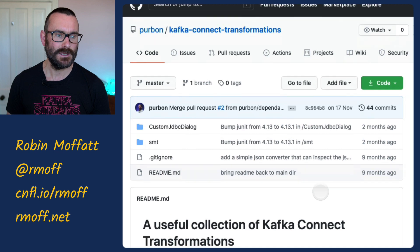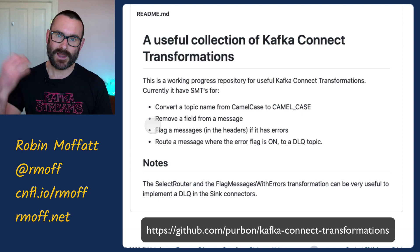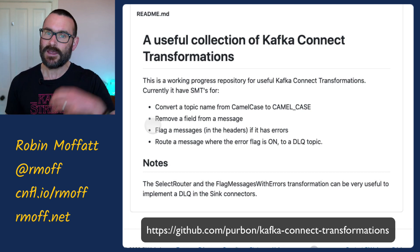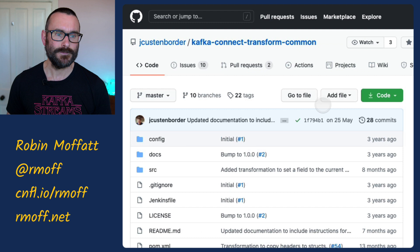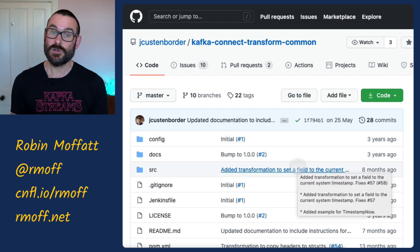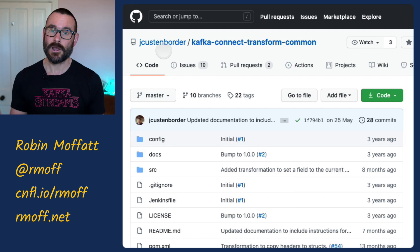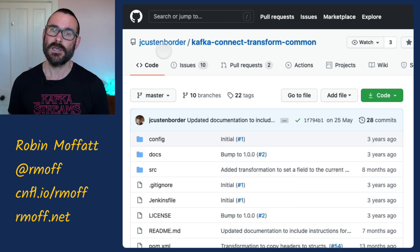Clicking around GitHub you can see different projects that implement SMTs. One looks rather interesting — I haven't had a chance to try it but it looks like you can route messages based on their contents, set a flag in the header, and Kafka headers are actually really useful and somewhat underutilized. You can say if a message matches this condition then do that. The ones I want to show examples from are these ones here from Jeremy Custenborder.